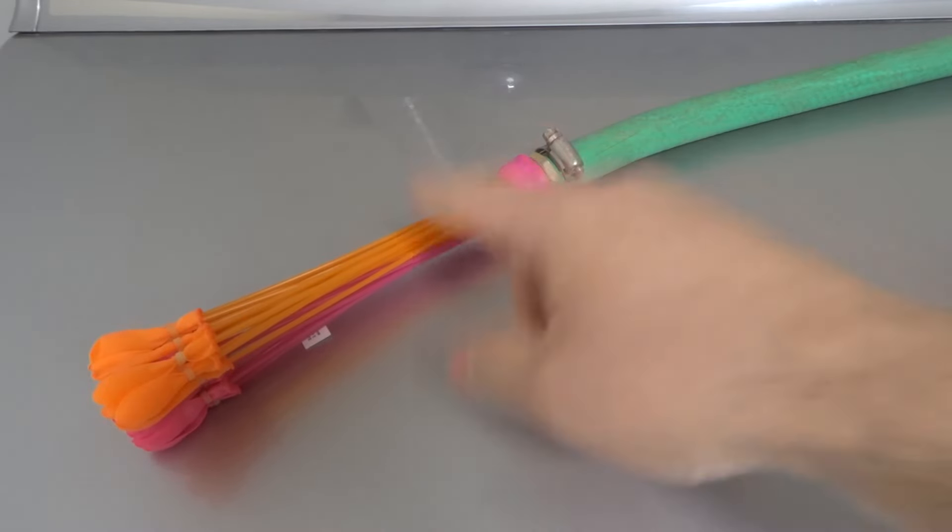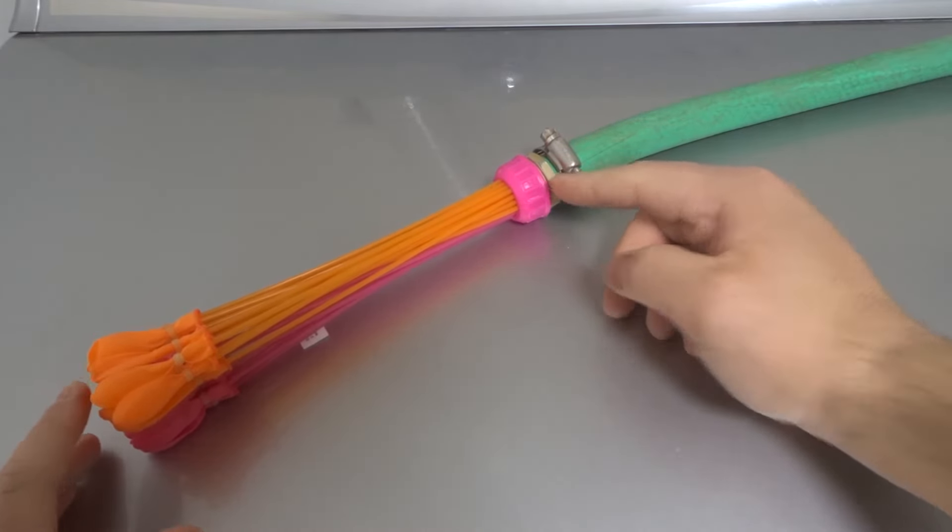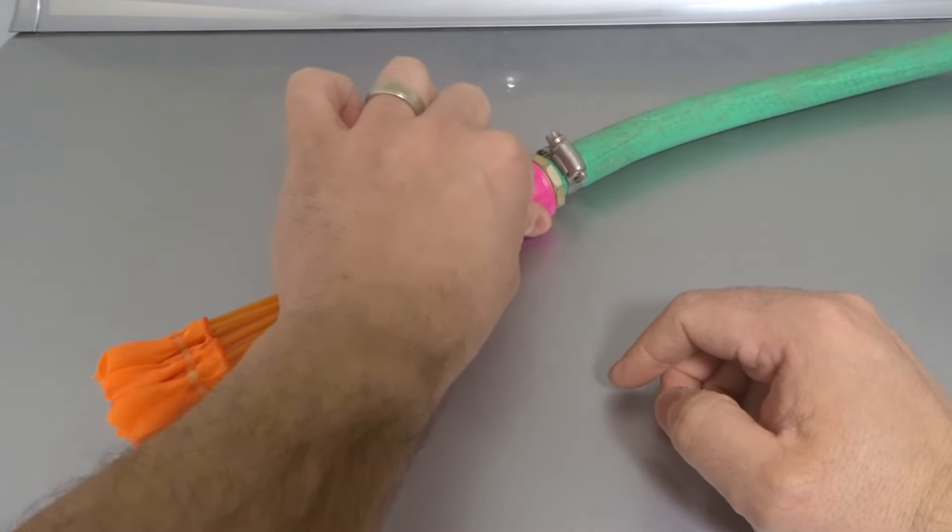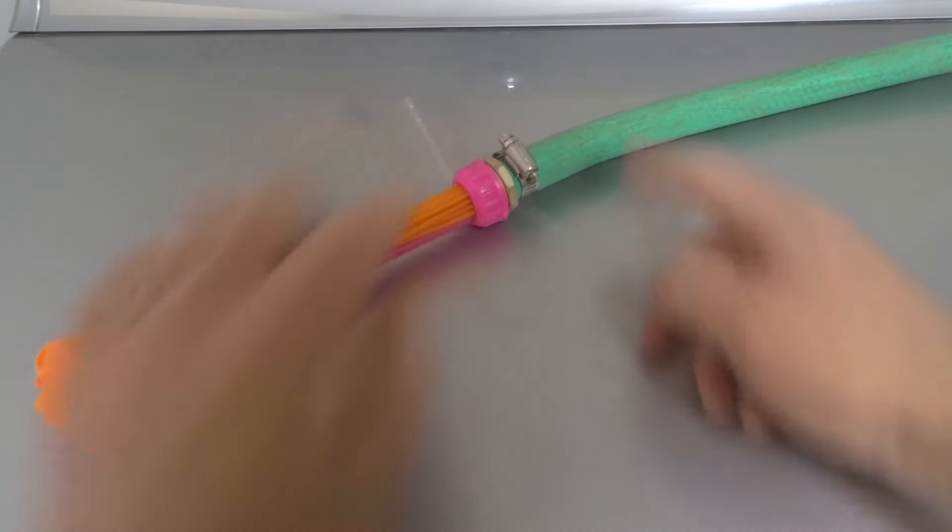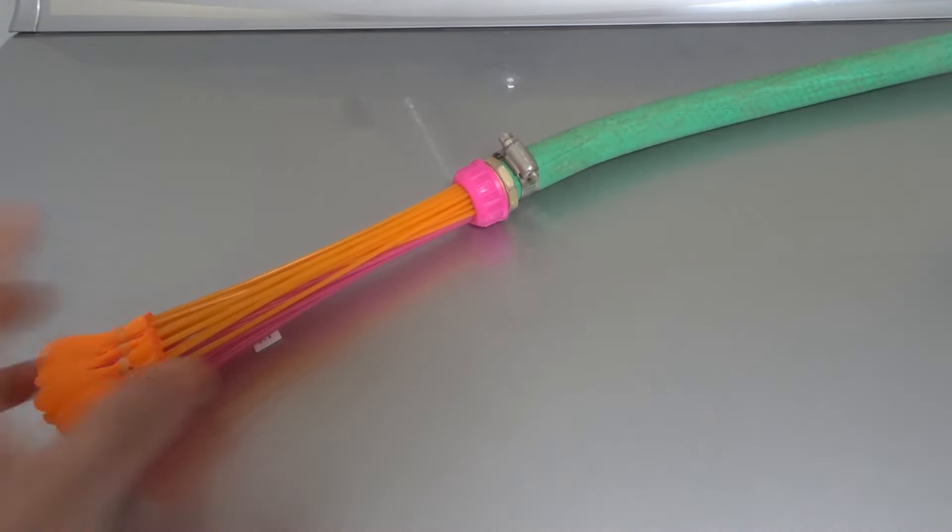Now, what you should have done before you connected it, make sure you turn your hose on for a moment to get all the air out of the hose, and make sure that it's filled up with only water. And then, once you've gotten the air out and you've connected this to the hose like that, then you're ready to fill up the balloons.